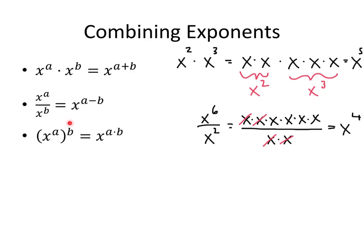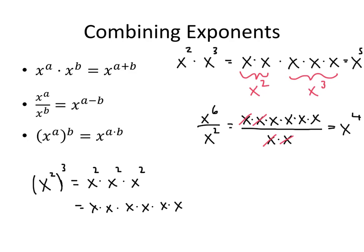Finally, when I have a power raised to a power — an exponential term raised to another power — I'm going to multiply the exponents. Let's do that with some small numbers. If I had x squared, parentheses, cubed, then that's x squared times x squared times x squared, which is x times x times x times x times x times x. Here's an x squared, here's an x squared, here's an x squared — but that's x to the sixth, and that's exactly what I get when I multiply the 2 by the 3.